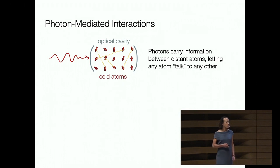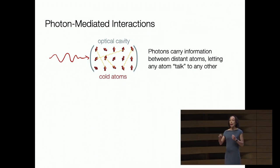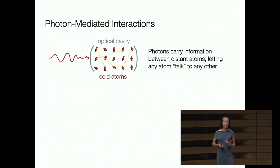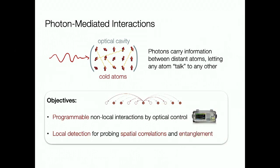The approach we take in our group is to use light to mediate interactions among atoms. We trap atoms within an optical resonator that allows, in principle, any atom to talk to any other, mediated by a single mode of light. We've been working towards enhancing the programmability of the interaction graph and combining the non-local connectivity afforded by the cavity with local detection to probe spatial correlations and entanglement.